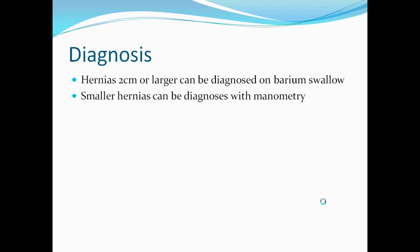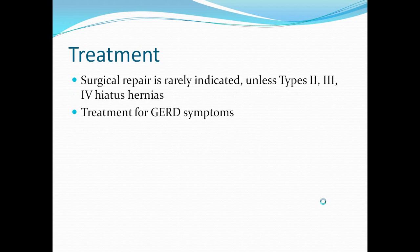The diagnosis is made often on chest x-ray, but can also be made by witnessing a hernia 2 cm or larger on a barium swallow. Smaller hernias can be found with esophageal manometry. Surgical repair is rarely indicated for Type 1, since symptoms are usually mild or non-existent. Types 2, 3, and 4 may require surgery as part of the general rubric of post-op complications. Treatment for uncomplicated or barely symptomatic hiatus hernias follows the same approach as for GERD symptoms.